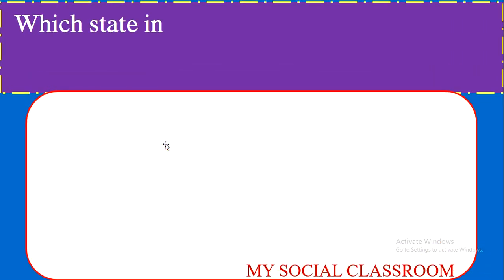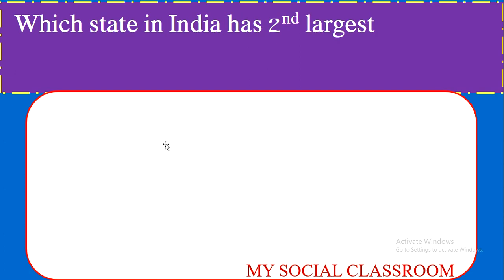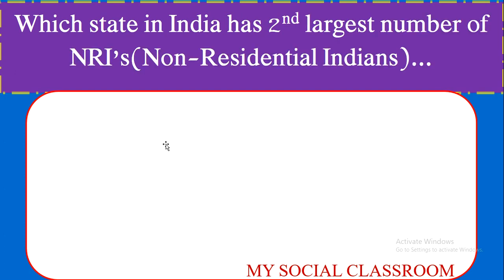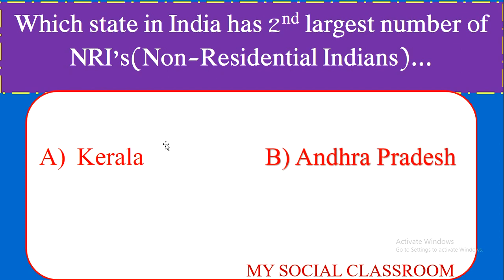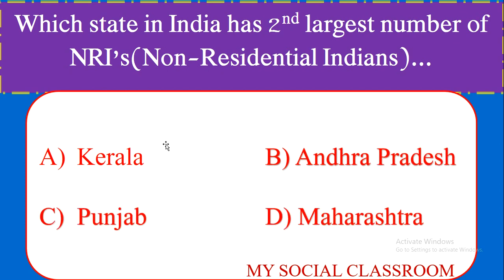Which state in India has the second largest number of NRIs? Options: Kerala, Andhra Pradesh, Punjab, Maharashtra. Correct answer: Punjab.